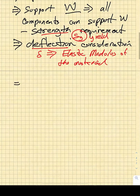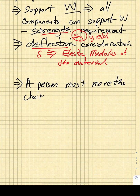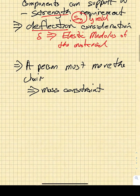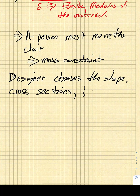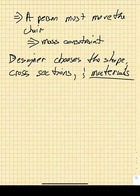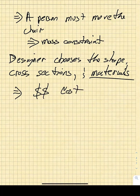A person must be able to move the chair, which means there is going to be a mass constraint. The designer chooses the shape, cross sections, and the materials, so material selection is a very important part of all of this. There's another thing that comes into play: how much does it cost? It doesn't matter how good the chair is — if no one wants to pay for it, you aren't going to sell any, and that will be a failed product.